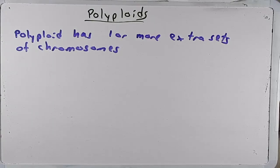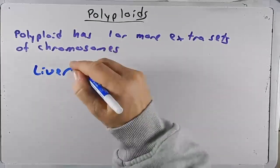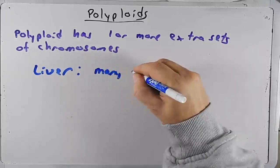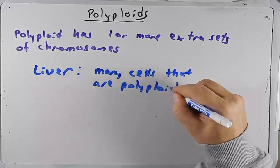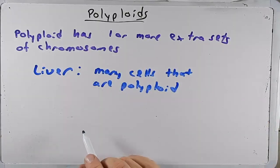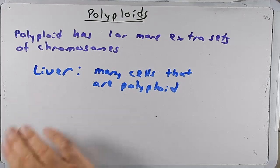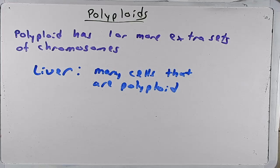Even though polyploids are lethal in humans, interestingly the liver is an exception. We know that in the liver there are many cells that are polyploid — triploid, tetraploid, various forms. One hypothesis for why this is allowed in the liver is that it's a pretty toxic environment, so those cells are exposed to more toxins than other cells, and chromosomes may accumulate damage. Throughout evolution, since the liver is an important organ, our bodies may have selected a way that allows those cells to tolerate polyploidy and maybe even function better as polyploids, though we don't really know for sure.